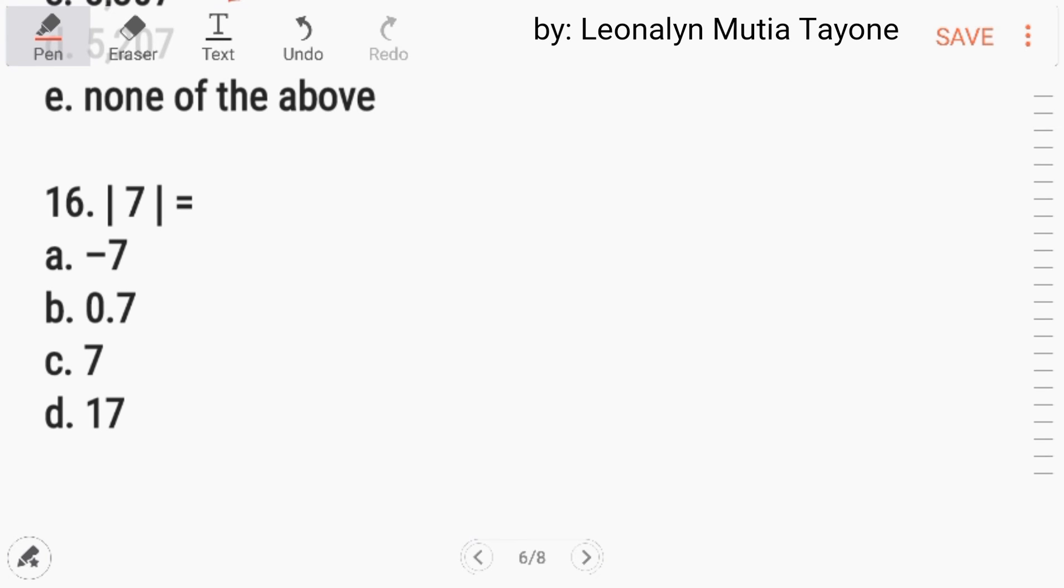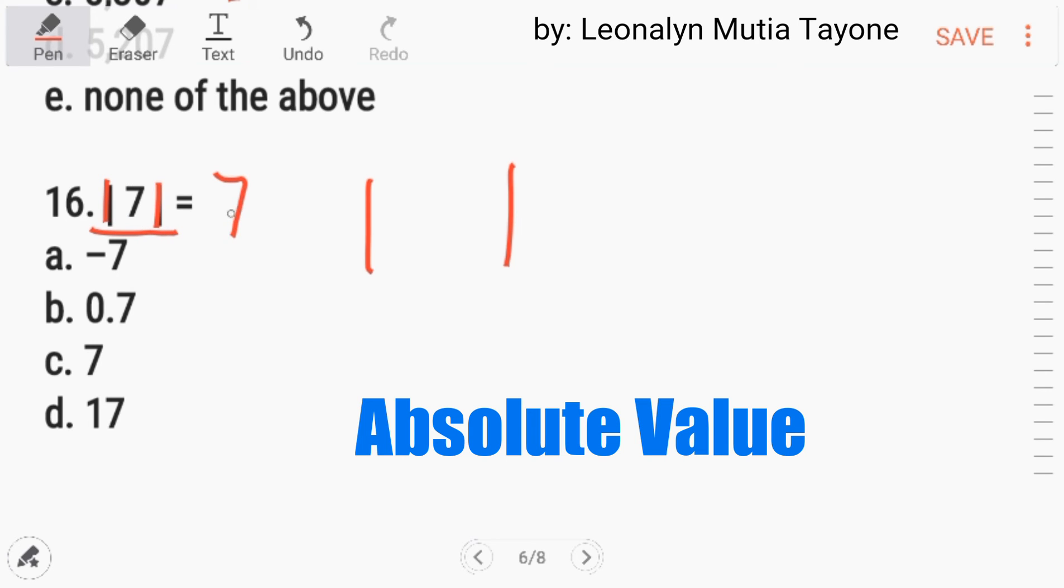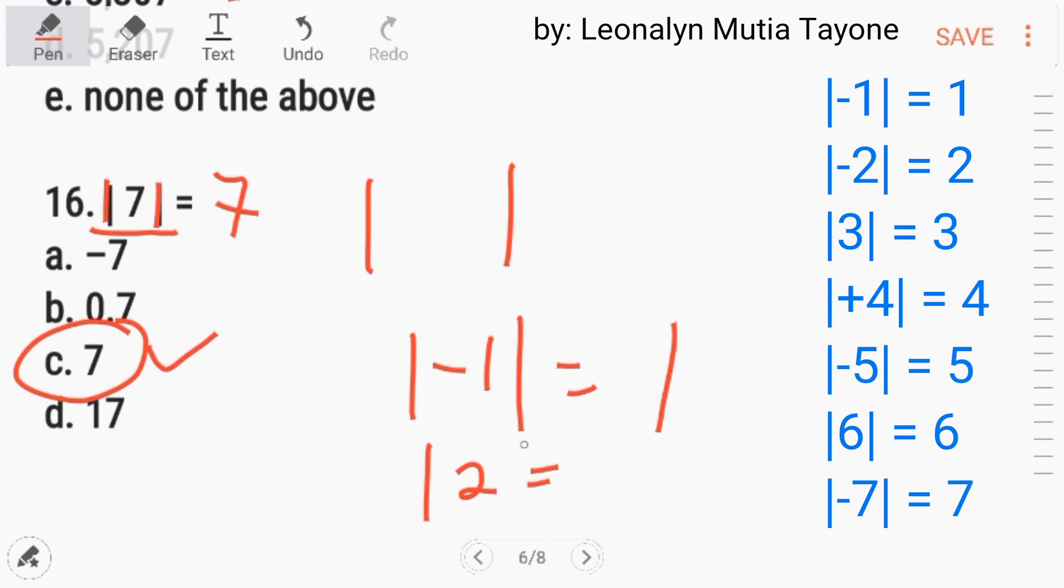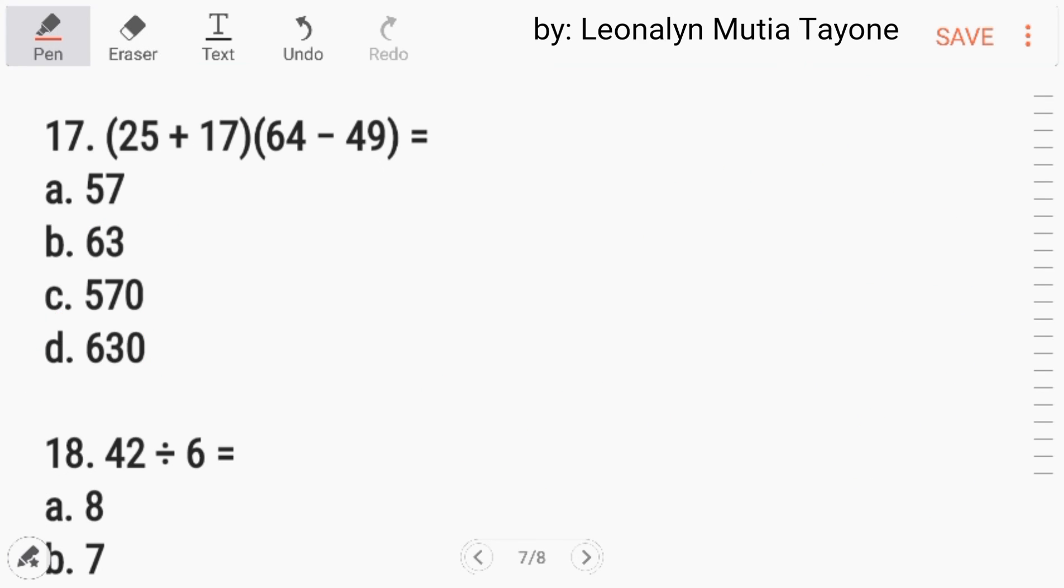Number 16. Ang bar na ito, ibig sabihin ito ay absolute value. So the absolute value of a number is the distance that number is away from 0 on a number line. So the absolute value of 7, absolute value of 7 is 7. So the answer is letter C. Another example. Absolute negative 1, and this is 1. Absolute number 2, it is 2. Absolute number of negative 2 is 2.